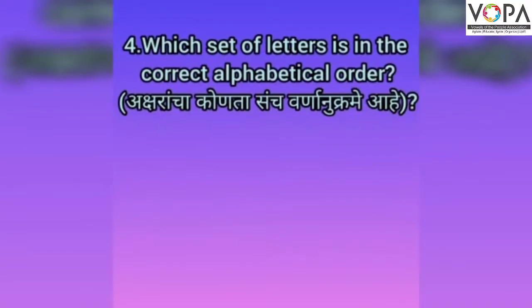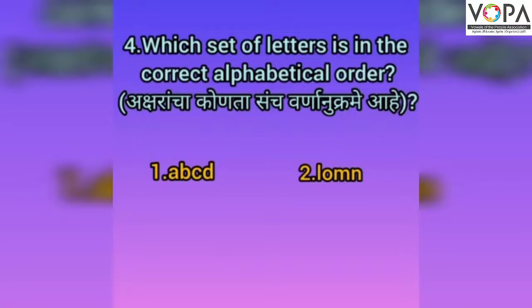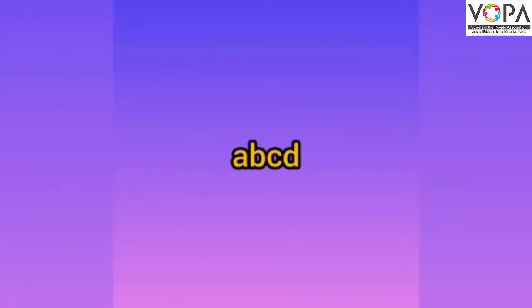The next question is: which set of letters is in the correct alphabetical order? The options are A, B, C, D; then L, O, M, N; and H, I, K, N. The correct answer is A, B, C, D.